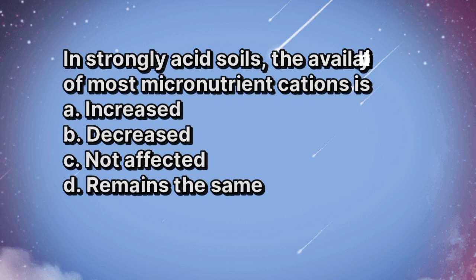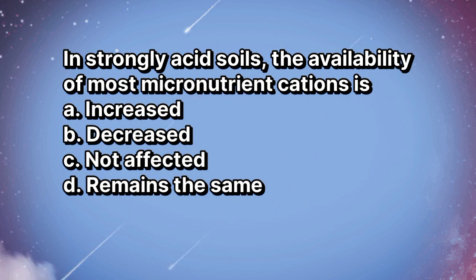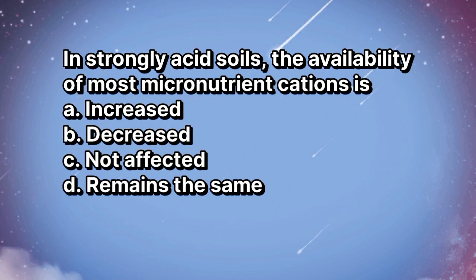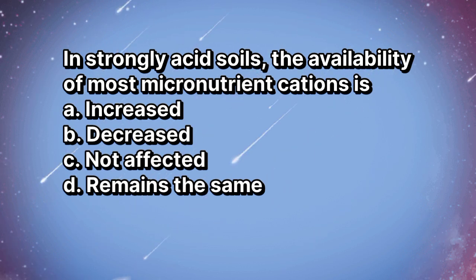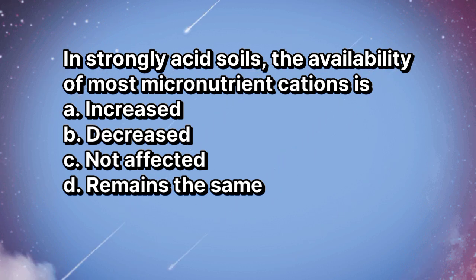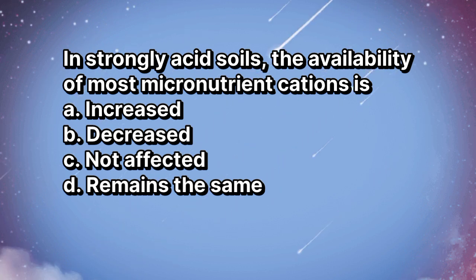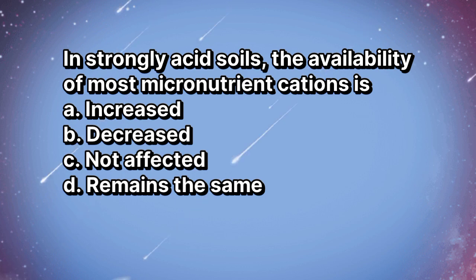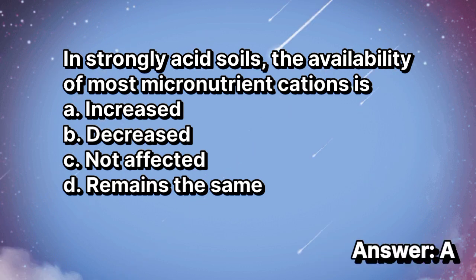In strongly acid soils, the availability of most micronutrient cations is: A. Increased. B. Decreased. C. Not affected. D. Remains the same. The answer is letter A.